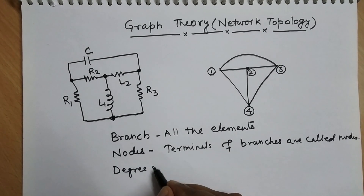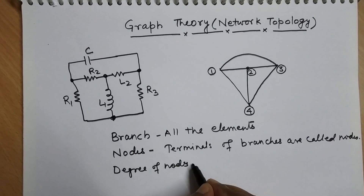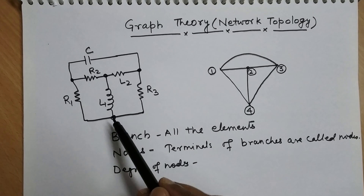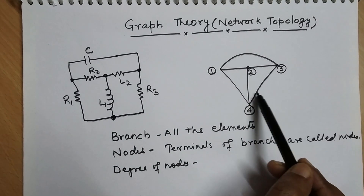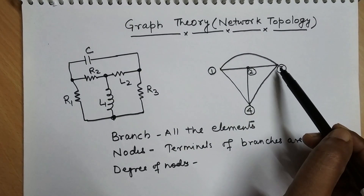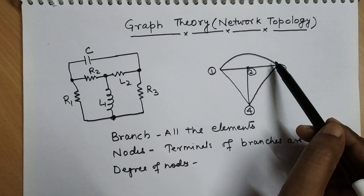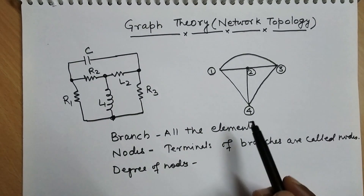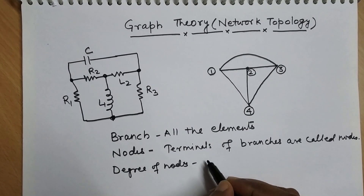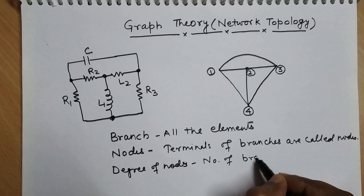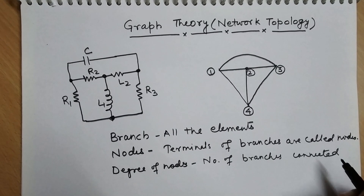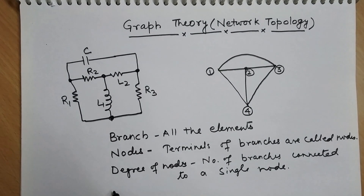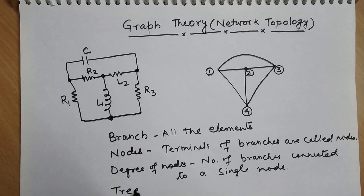The terminals of branches are called nodes. The degree of a node is the number of branches connected to it. For example, at node 4, there are 3 branches connected, so the degree of that node is 3. Similarly, at node 3, there are again 3 branches connected, so the degree is 3. If only 2 branches are connected at a node, the degree of that node is 2.